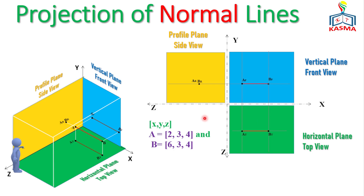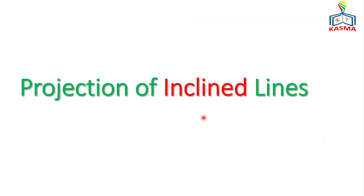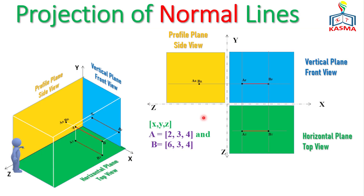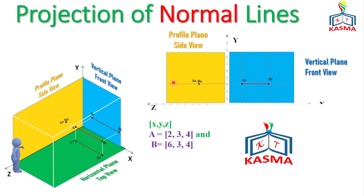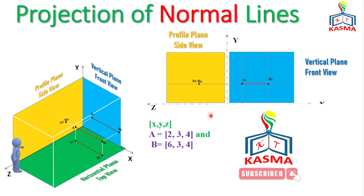Since it is a normal line, the projections on two planes are true length and it is a point on the third plane. If you want to know more about projections of other types of lines, like inclined lines, or projections of points, you can find the links in the video description. Thank you for watching and see you soon.